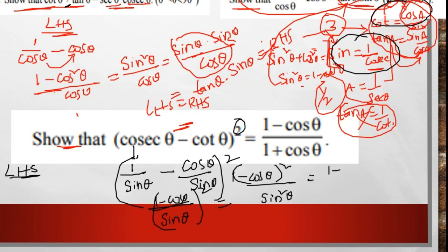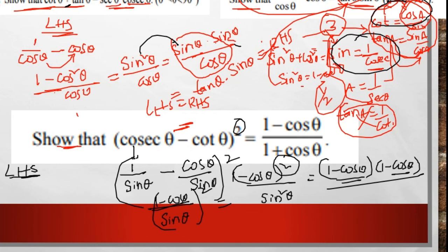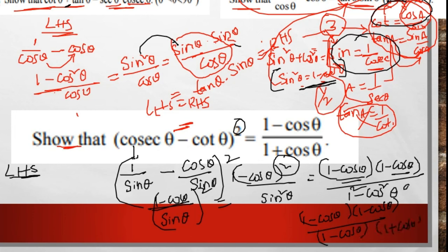1 − cos²θ means (1 − cos θ)(1 + cos θ) — this is in the form of a² − b² = (a + b)(a − b). In the numerator, (1 − cos θ) and the denominator (1 − cos θ) cancel. We are left with (1 − cos θ)/(1 + cos θ), which is the RHS.